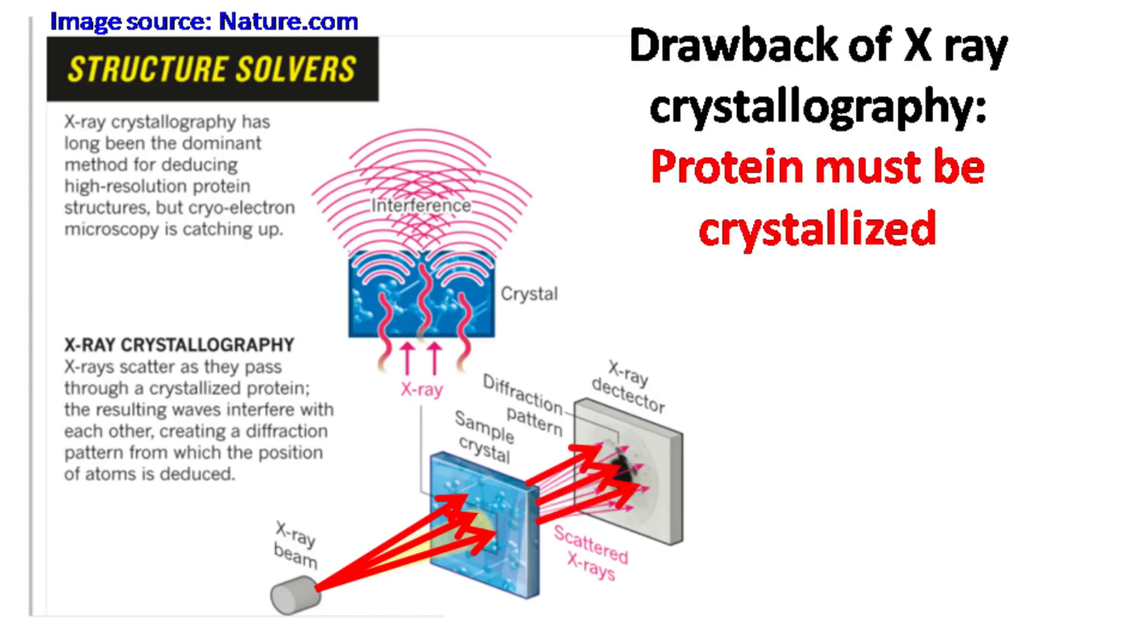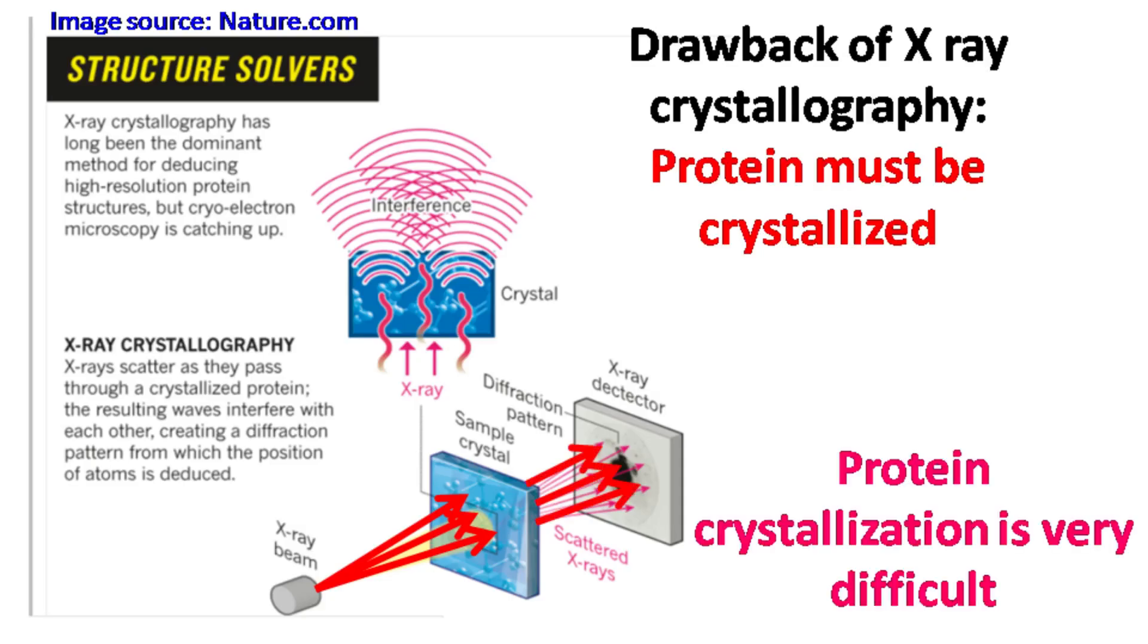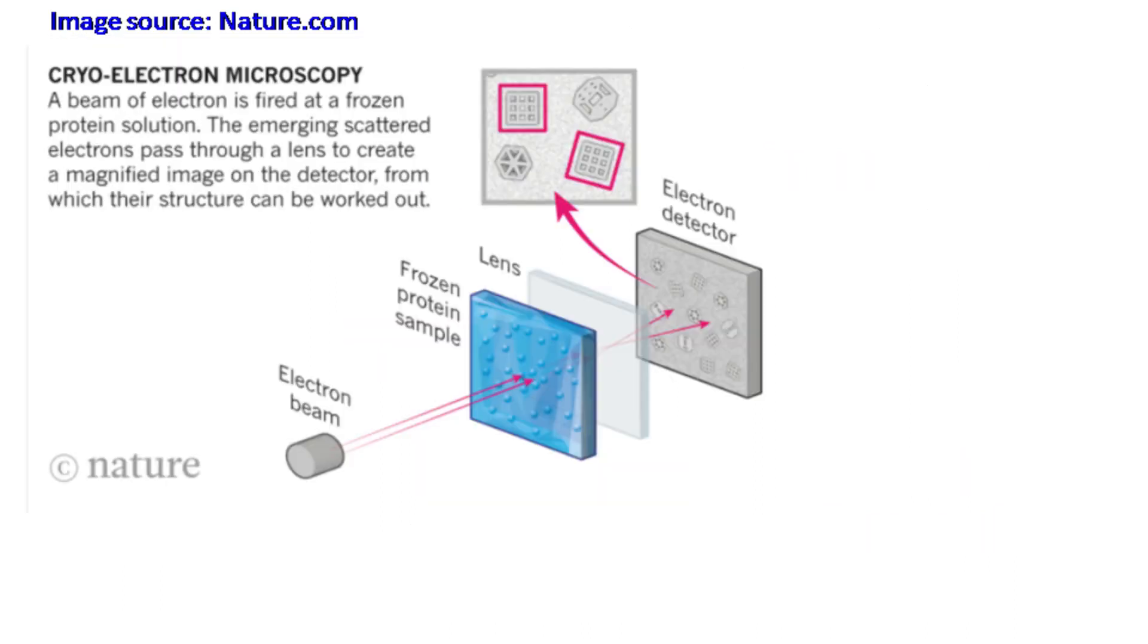However, the major drawback of X-ray crystallography is that proteins need to be crystallized, and crystallization of proteins is very difficult. Because of these drawbacks, people started searching alternative methods to obtain 3D structure of proteins. This was cryo-electron microscopy.